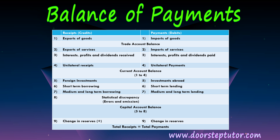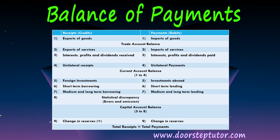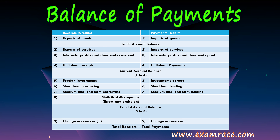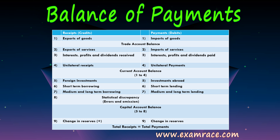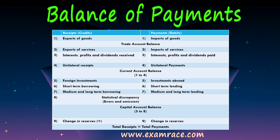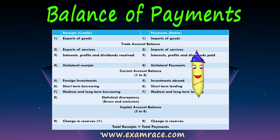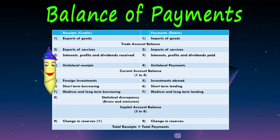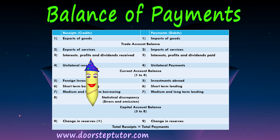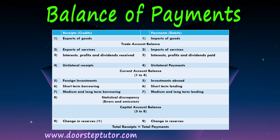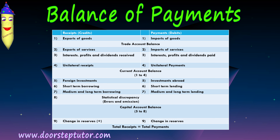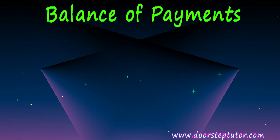This is a typical account of a balance of payments. On the left side you have credit and on the right you have debit. Under the current account you have exports and imports of goods and services, unilateral receipts and payments, interest, profits, and dividends received and paid. In the capital account you have foreign investment, short-term, medium, and long-term borrowing, investments abroad, and lending. The official reserves account shows changes in reserves on both the credit and debit sides. Accounting for all of these, including errors and omissions, gives us a balanced BOP in the accounting sense.